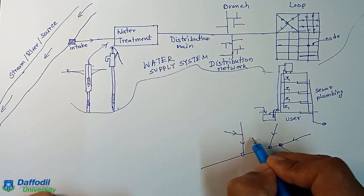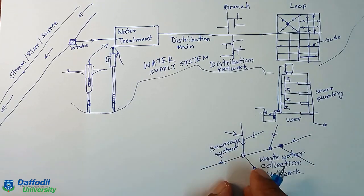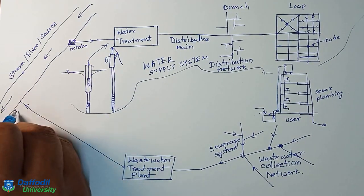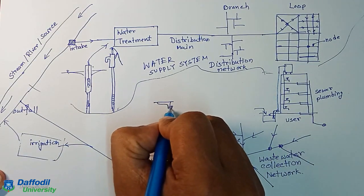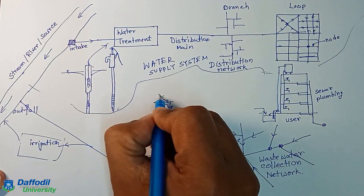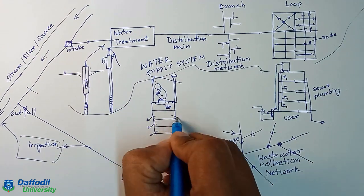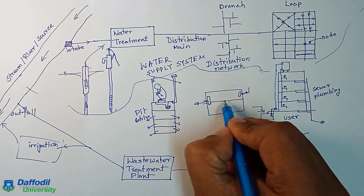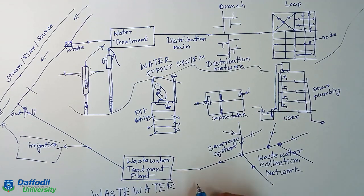When the users use the water, it produces wastewater. The wastewater is removed from the user through a series of pipes which forms the sewerage network. Generally, the wastewater is treated before we return it to nature. In this course, we will study everything related to wastewater and its safe return to nature.